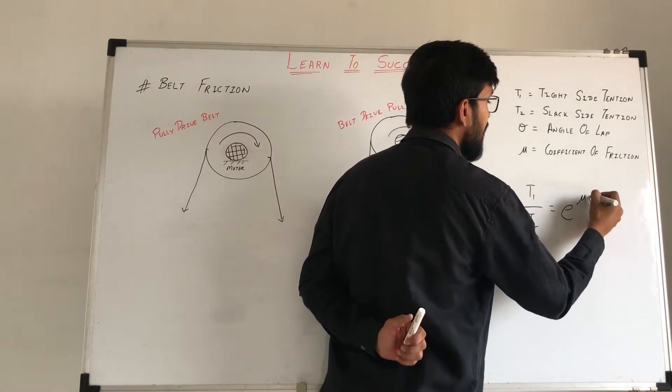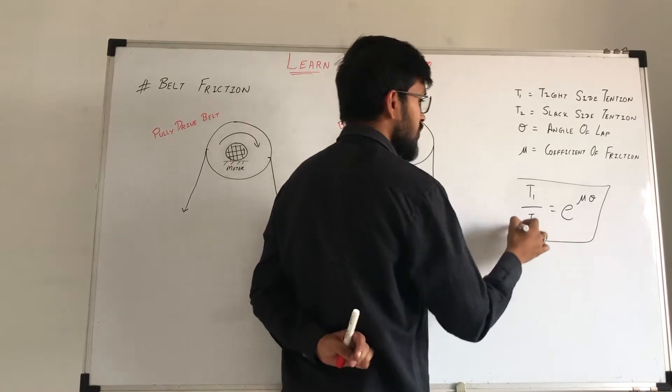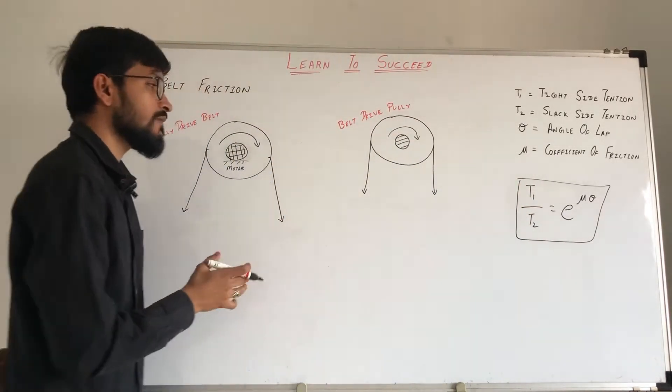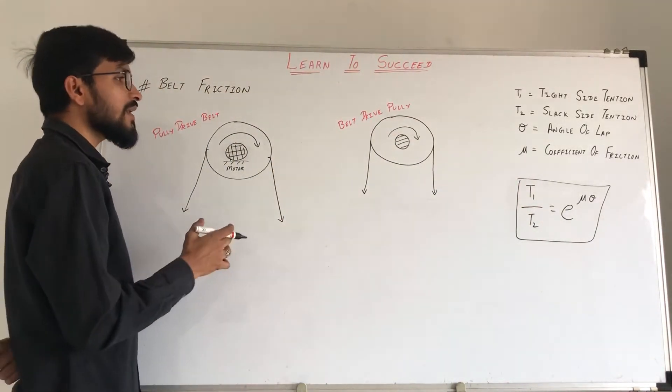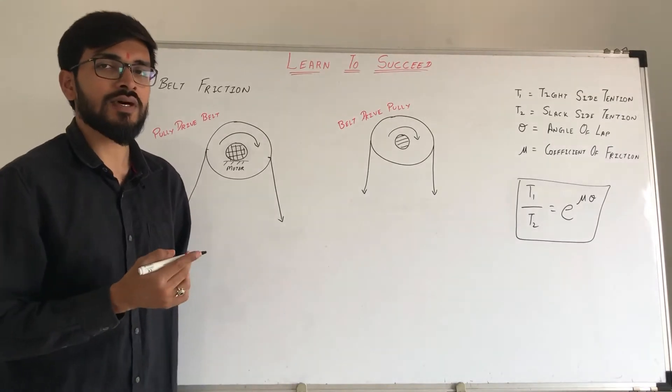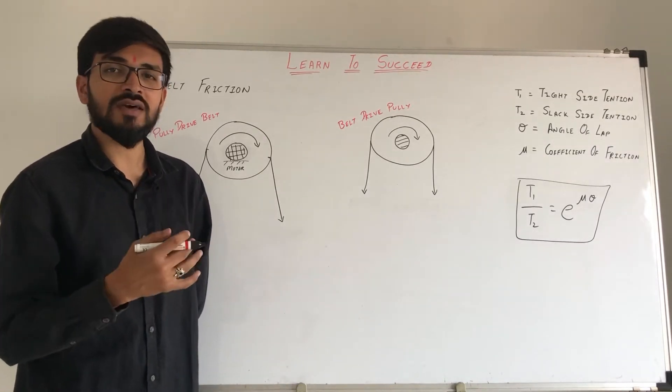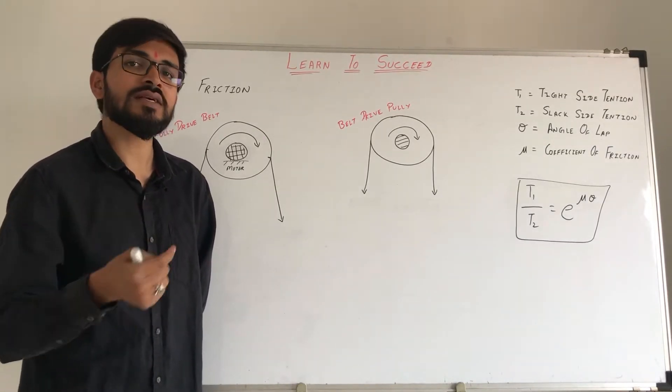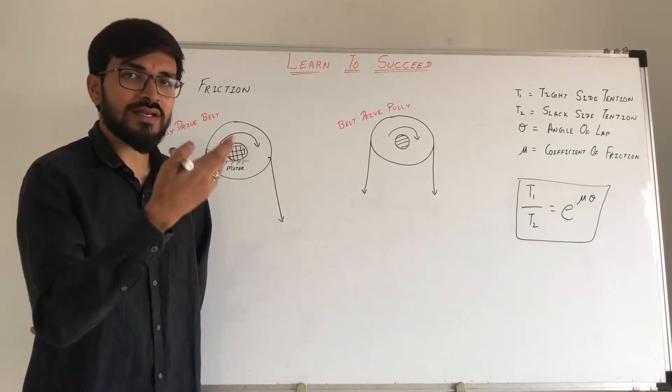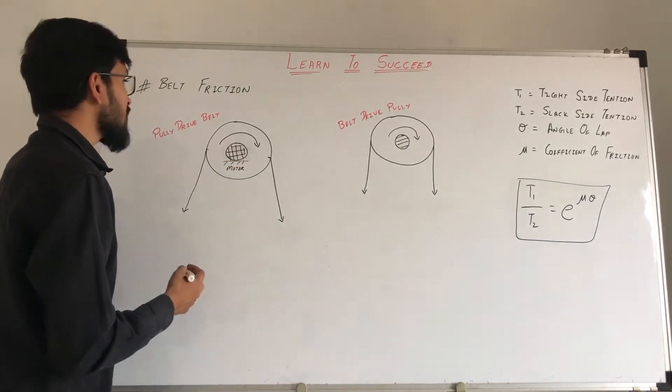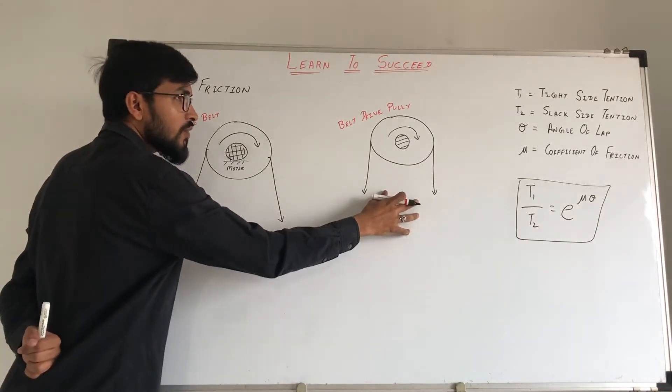The value of this formula is tight side and slack side. In belt friction you can use slack side. In this case it is T1 and T2.